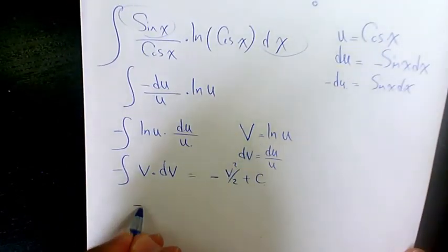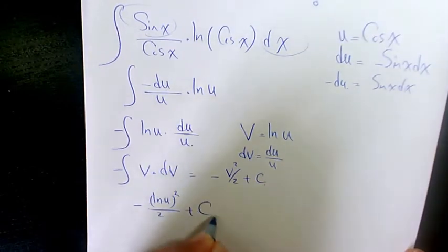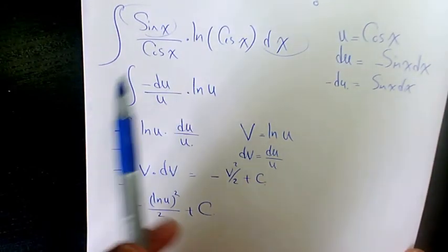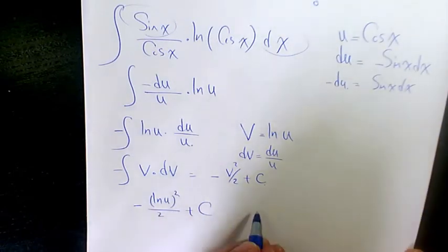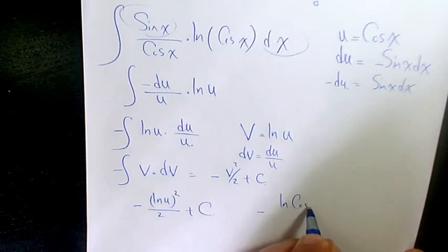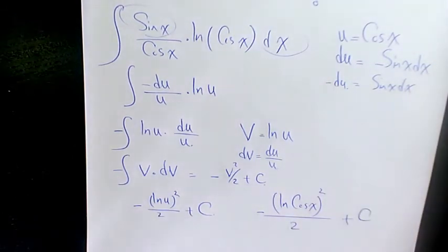And v is ln u, which is going to be negative ln u to the power of 2 divided by 2 plus a constant number. And u is cosine. So it's going to be negative ln cosine x to the power of 2 divided by 2 plus a constant number.